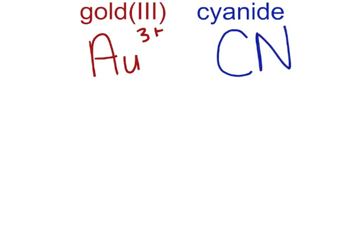Gold(III) cyanide. Gold symbol is Au. And with the Roman numeral 3, this must have a positive 3 charge. Cyanide is a polyatomic ion, CN. It's a carbon and a nitrogen, and they've got a charge of negative 1 overall.